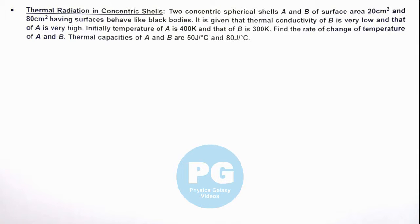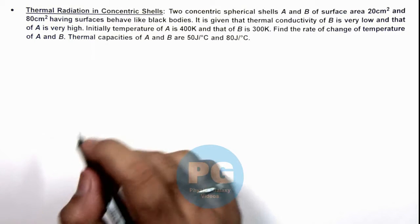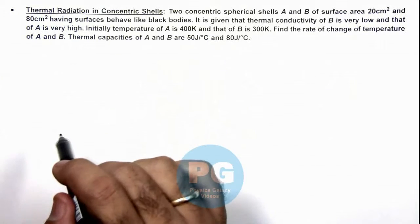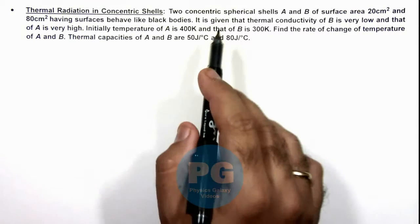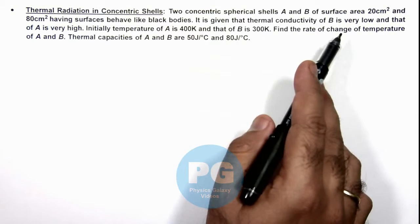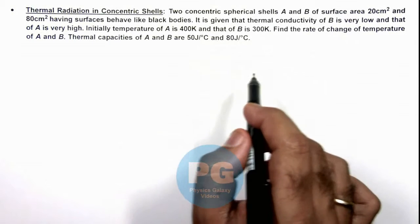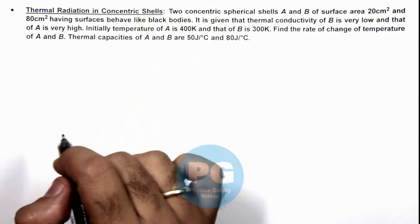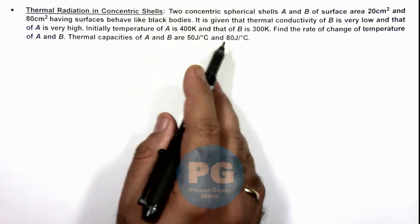In this illustration we'll discuss thermal radiation in concentric shells. We are given two concentric spherical shells A and B of surface area 20 and 80 centimeter square, having surfaces that behave like black bodies. The thermal conductivity of B is very low, meaning whichever amount of heat it absorbs, it raises its temperature and conducts very little heat. The thermal conductivity of A is very high, meaning it doesn't absorb any heat — it conducts all the heat. Initially, the temperature of A is 400 Kelvin and that of B is 300 Kelvin.